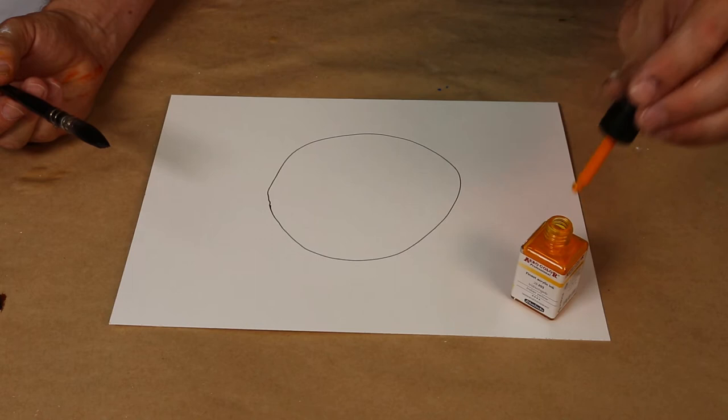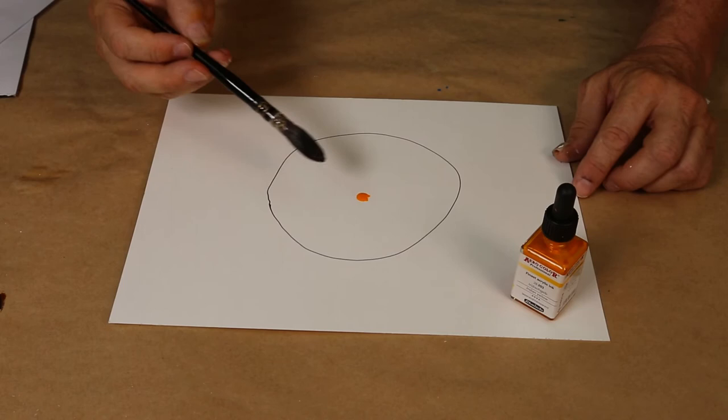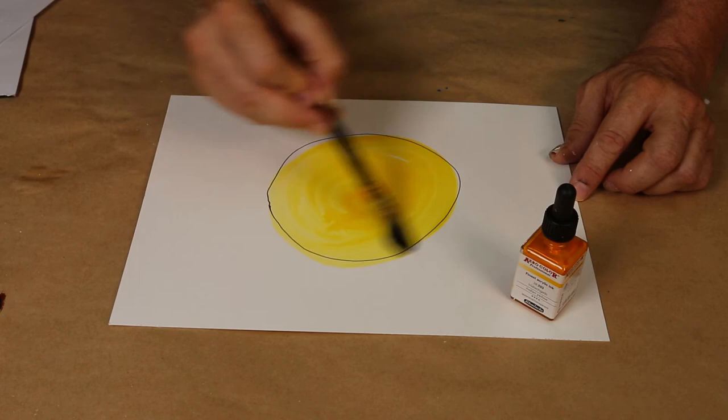And I'm going to put just a single drop of Schmincke Aero Colour Indian Yellow in the center of that. I've loaded up my Kaiseico brush with water and we're just going to see how far this goes. Wow, that really spreads.